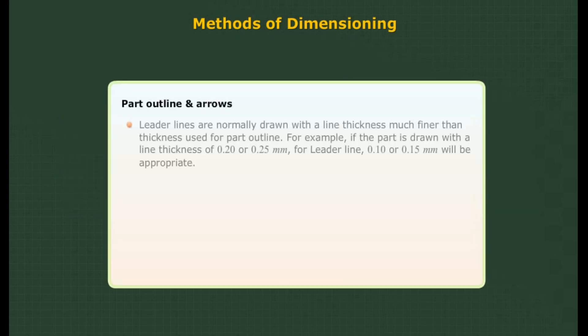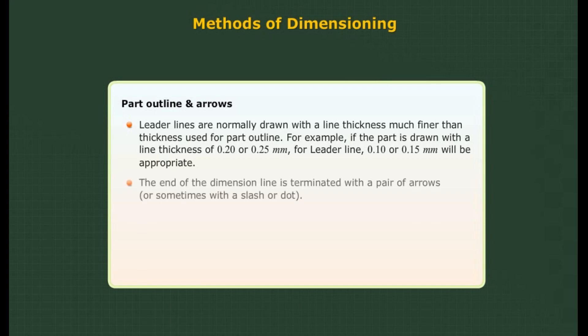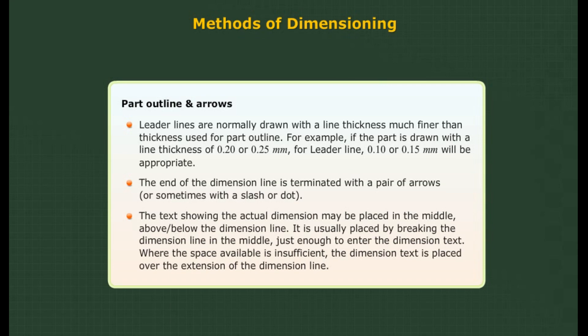Leader lines are normally drawn with a line thickness much finer than the thickness used for part outline. For example, if the part is drawn with 0.20 or 0.25 mm thick lines, then 0.10 or 0.15 mm will be appropriate for leader lines. The end of the dimension line is terminated with a pair of arrows, or sometimes with a slash or dot. The dimension text may be placed in the middle, above, or below the dimension line — usually placed by breaking the dimension line in the middle. Where space is insufficient, the dimension text is placed over the extension of the dimension line.